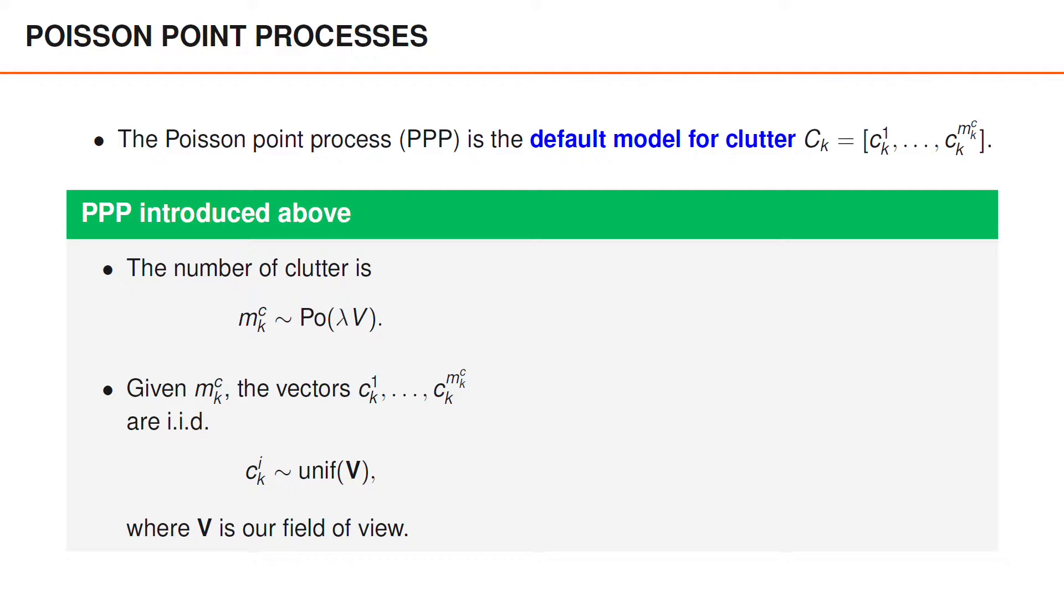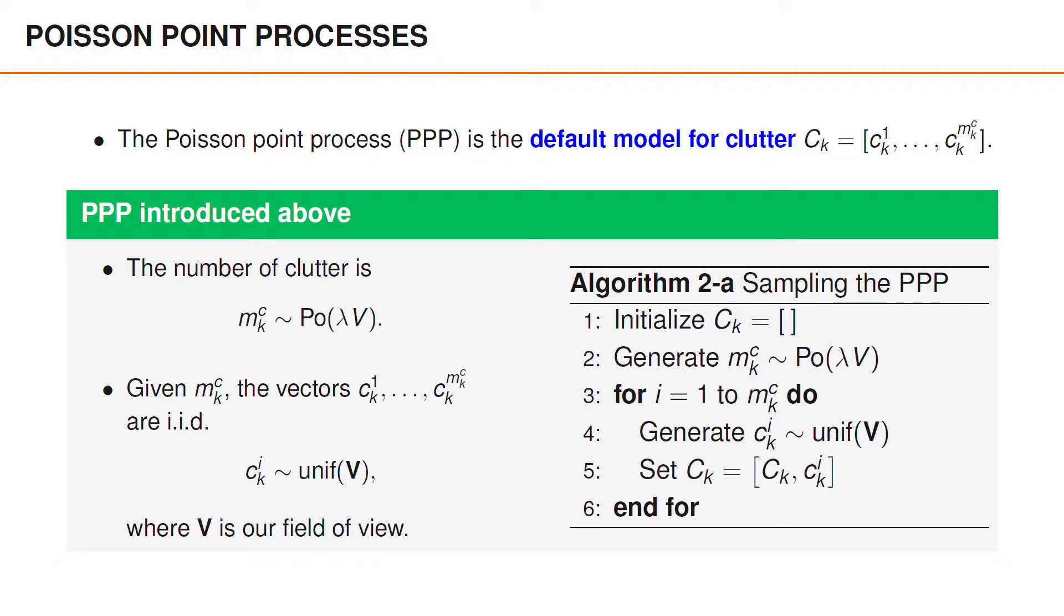To clarify what we mean by this, let us look at an algorithm that generates samples from this Poisson point process. To obtain a sample from this Poisson point process CK, we initialize CK to be an empty matrix. We then generate MKC from a Poisson distribution. Finally, we can use a for loop to generate all the vectors in the matrix. To do this, we simply generate a vector CKI from this uniform distribution, and then we include that vector as a new column in the matrix CK.